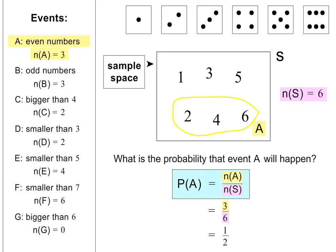Please note, we normally simplify our answers when calculating probabilities, which we can also write as 0.5, or even as 50%. These are just three different ways of saying the same thing. Please pause the lesson if you need more time here.